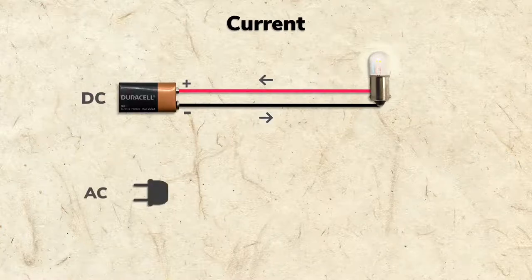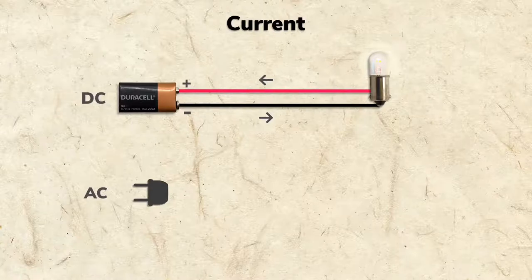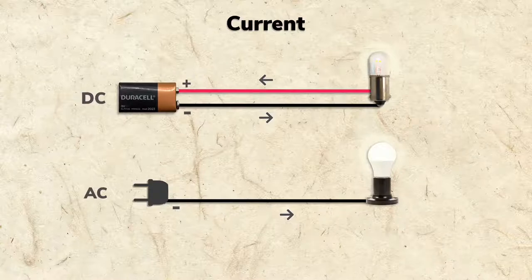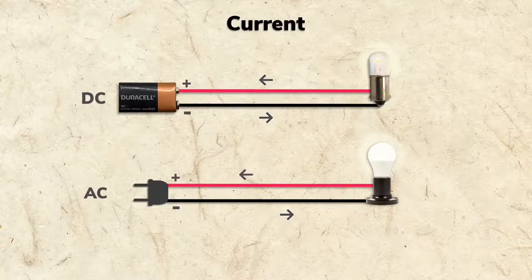AC, or alternating current, starts the same way. It leaves the negative terminal, passes through a component such as a bulb, and returns to the positive.